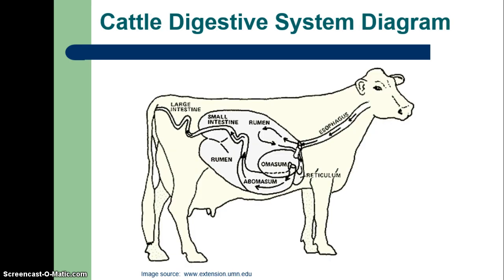In this picture of a cattle or ruminant digestive system, it's very easy to see that there are some major differences. Once the food goes through the esophagus it goes into a very large compartment. Cattle have one stomach but it has four compartments: the rumen, which is the first part and allows feed to come back up to be chewed further and then swallowed again; the reticulum, also called the hardware stomach, where any foreign objects the animal may have eaten would end up; then the omasum; and finally the abomasum, which functions most like what we think of as a true stomach.